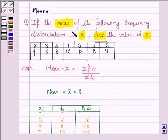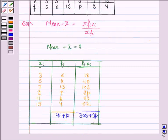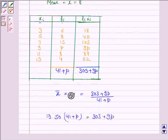Now, we are given that mean is 8, not 50. So we have to write 8 here and here also.